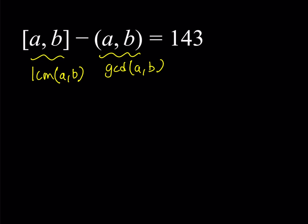We're talking about two things here: the multiple of two numbers and the divisor of two numbers. Let's define the following: LCM of A, B — let's call that M for the multiple — and GCD of A, B — let's call this D for the divisor. We can set up our equation simply as M minus D equals 143, and we're going to be looking for values of A and B.